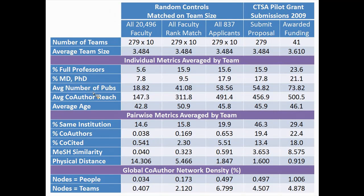The hard part is combining all these factors into a single number and then looking at the 10 to the 15th possibilities to find the team with the highest score. How do you figure out that magic optimization function? What you can do — and we've done this at Harvard and at Northwestern — is look at teams that have applied for funding and been successful, and see what factors are influential in a team being successful. I looked at Harvard CTSA pilot grants — every CTSA has these. Here I'm showing 2009 data, which had 279 applications representing about 1,500 people.